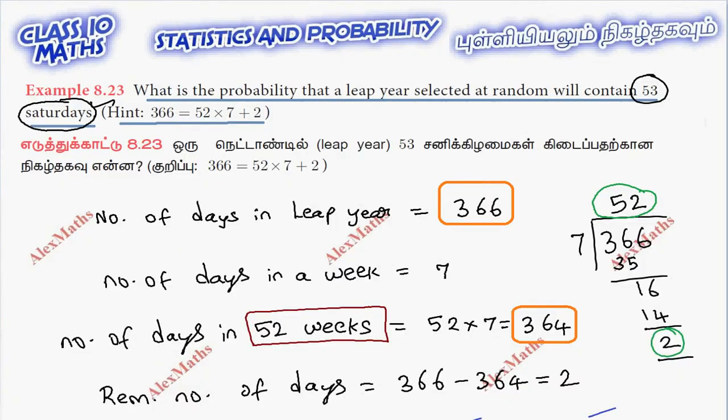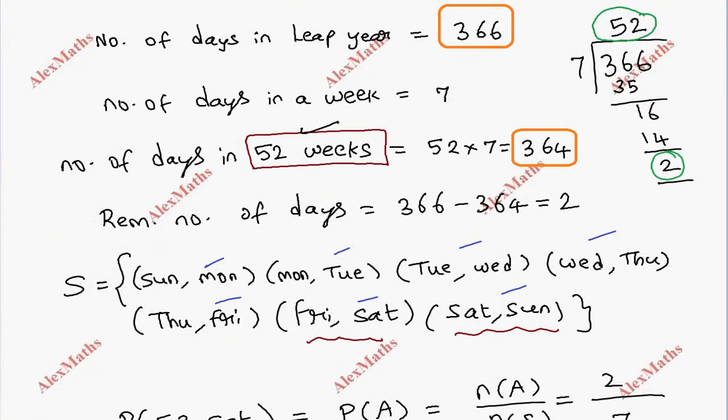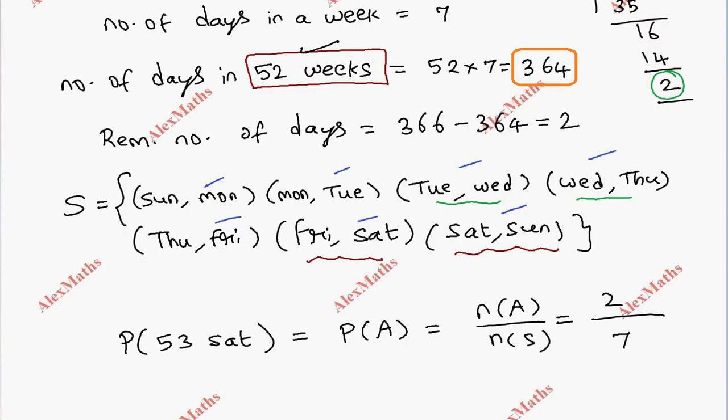Suppose you ask about Wednesday. In the 52 weeks, 52 Wednesdays are coming. Two days remain, and the two days will be in the combinations. For 53 Wednesdays, Wednesday must be in those two remaining days. So the answer is 2 by 7.